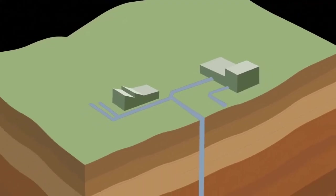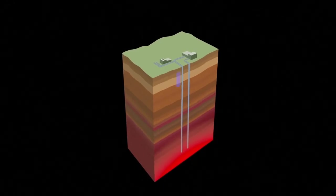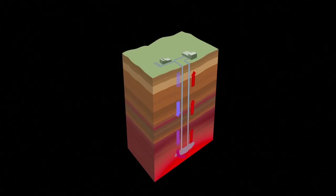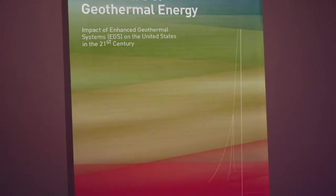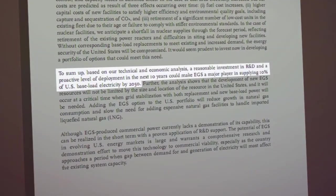In the experimental EGS system, two shafts would be drilled six miles deep. Water is pumped down one shaft to be heated in fissures, then rise up the other, generating power. According to a recent MIT report, this technology might supply 10% of US electricity by 2050.